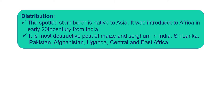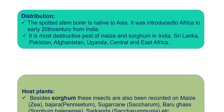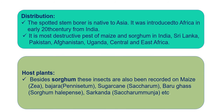Now we can see its host plants. Besides sorghum, these insects have also been recorded on maize, bajra, sugarcane, Sarkanda grass, and other related plants. These plants suffer from infection by Chilo Zonellus or Chilo Partellus.